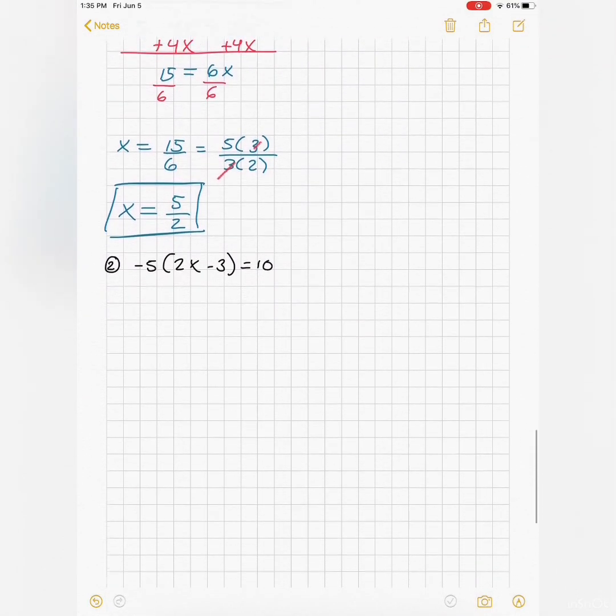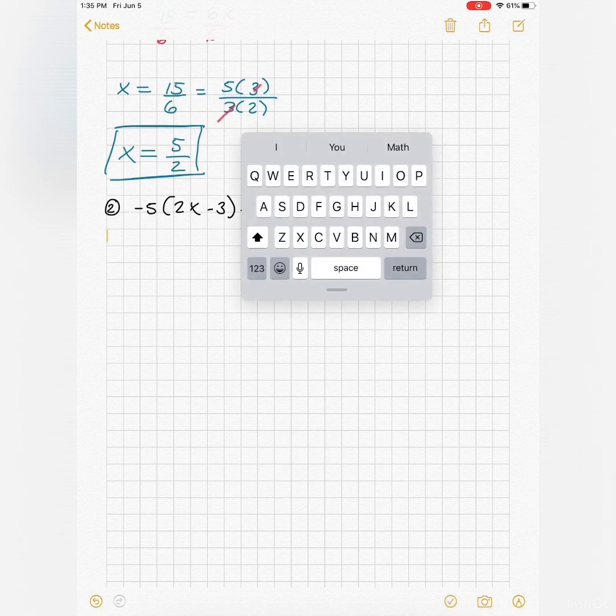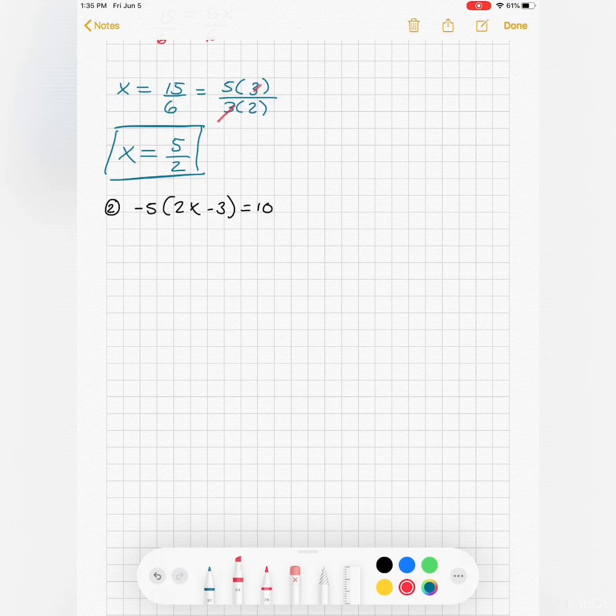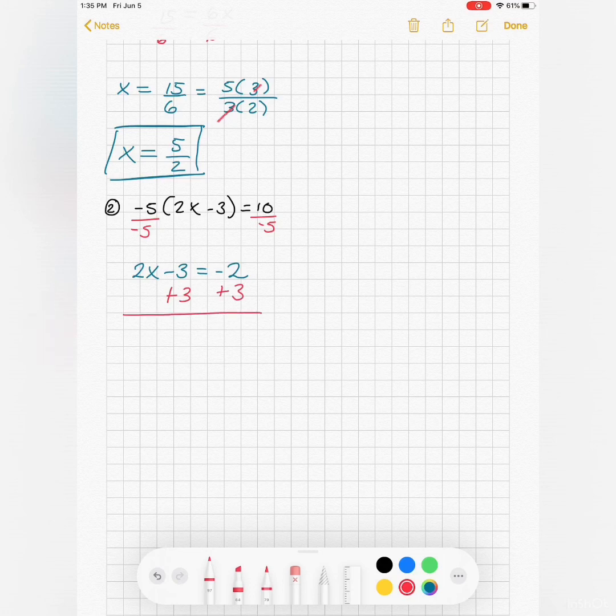This next one, the first thing I notice is I have this negative five multiplying this whole expression, so I would start by dividing both sides by that negative five. Then let's add the three, divide by two. So there's my solution. So you can check these by taking our solution and plugging it all the way back in the original equation, making sure we get a true statement.